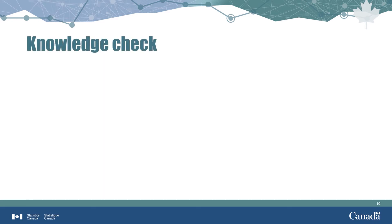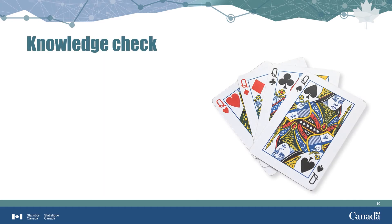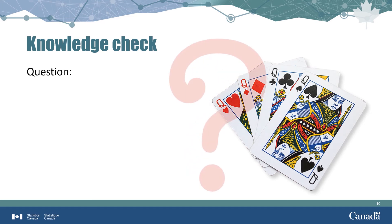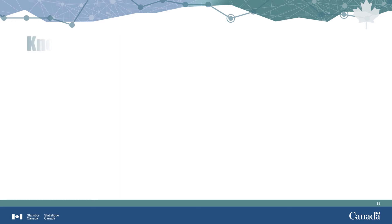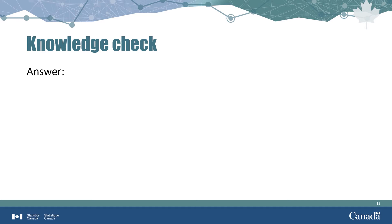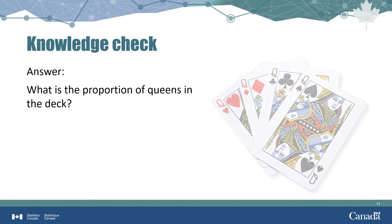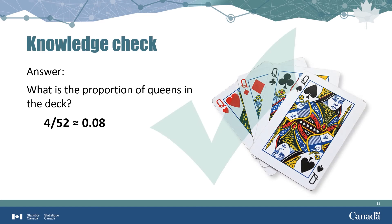Let's see if you can calculate proportions and ratios. What proportion of the deck is made up of queens? Four out of the 52 cards are queens, so the proportion of queens in a deck is about 0.08, or 8%.